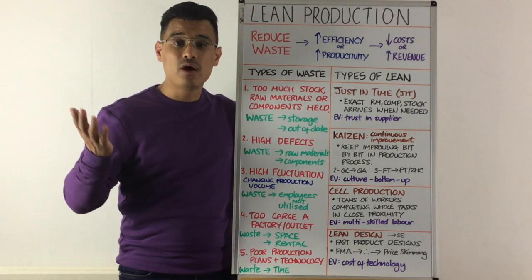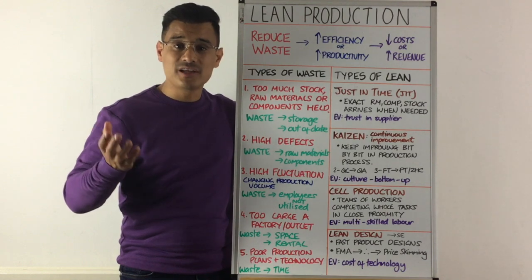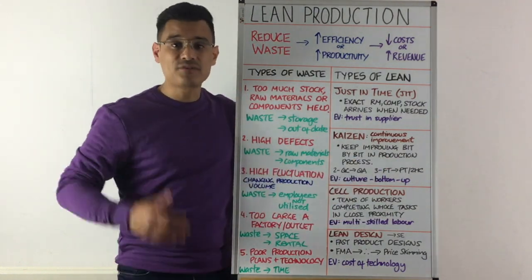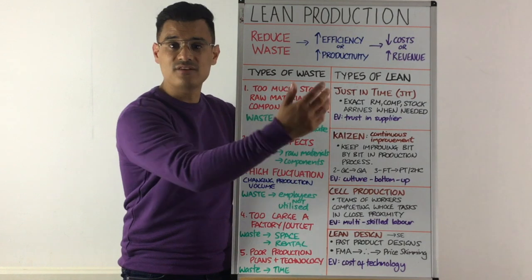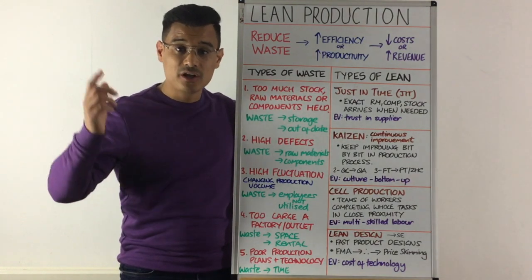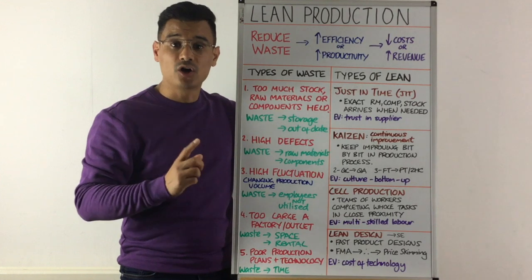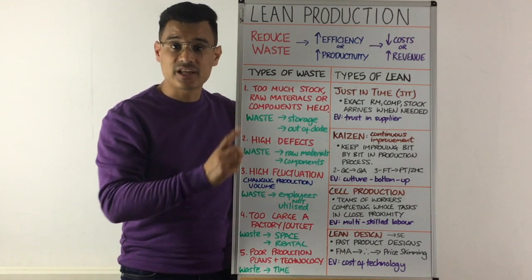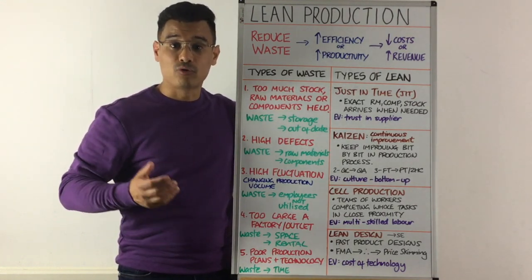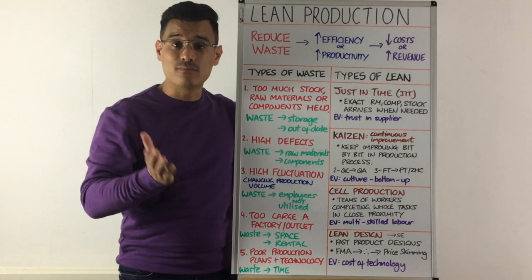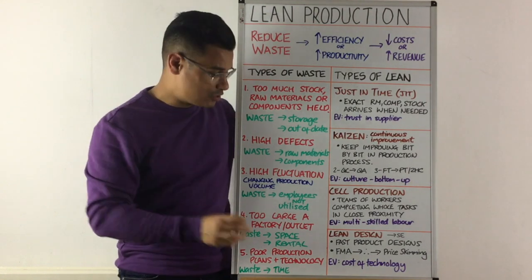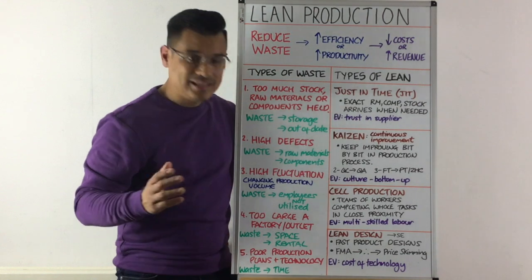The evaluation for cell production is that you often need to have multi-skilled labour. If you've got 10 different stations, it's quite common in cell production that workers are able to work on different stations, so they are multi-trained — and getting them to that level of skill might be a problem. The next type of lean production is lean design.